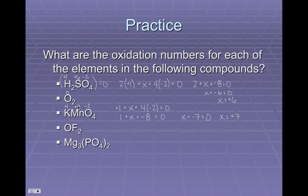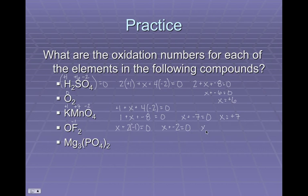For OF₂ — oxygen difluoride — this is a covalent compound. Fluorine in a compound is always -1. Oxygen is usually -2, but when bonded to fluorine it won't be -2. Making oxygen our X: X + 2(-1) = 0, so X - 2 = 0, therefore X = +2. In this case oxygen is +2.